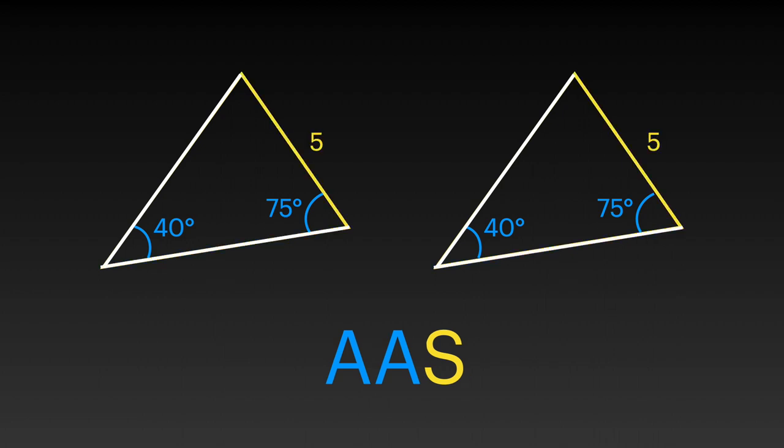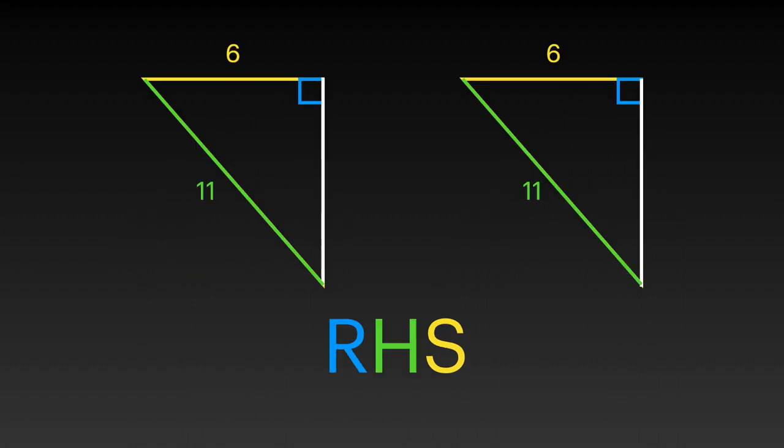AAS, two angles and a non-included side. And last but not least, RHS takes pride. Congruent triangles,